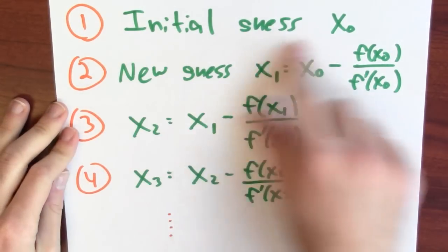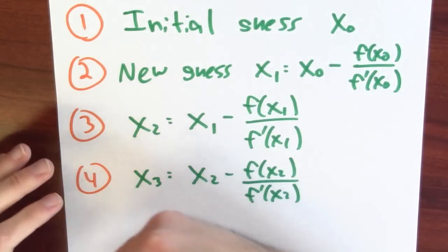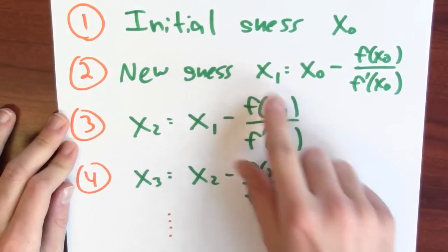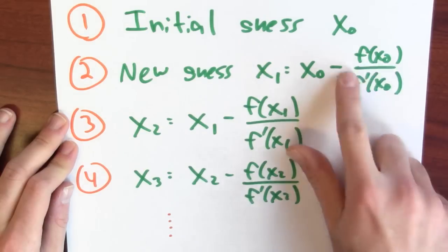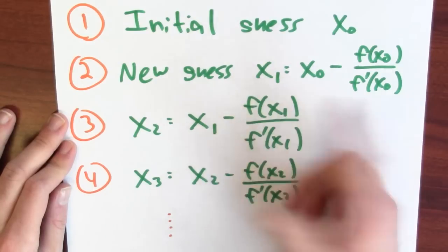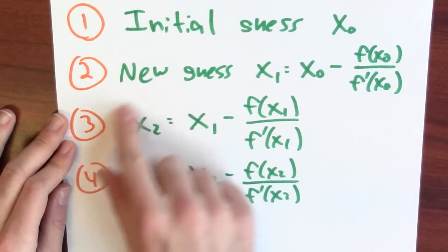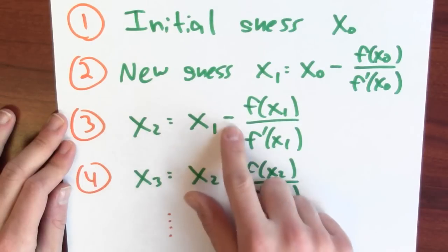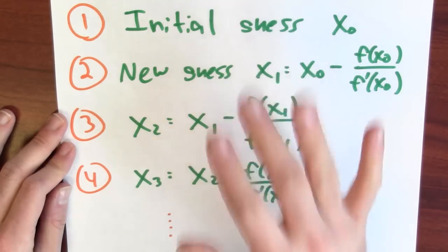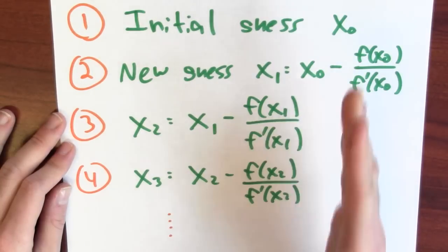With this equation in hand, I can write down the step-by-step process for Newton's method using a formula. I start with some initial guess x0, draw the tangent line to the graph at (x0, f(x0)), and look where it crosses the x-axis to get x1 — my new guess is x0 minus f(x0) divided by f'(x0). Then I play the same game: draw the tangent line at (x1, f(x1)) to get x2. The same formula works: old guess minus the function at the old guess divided by the derivative at the old guess.